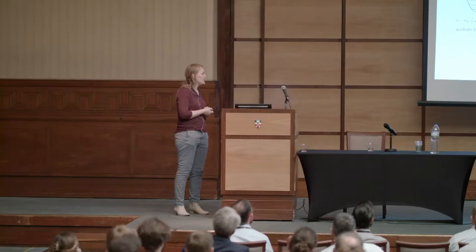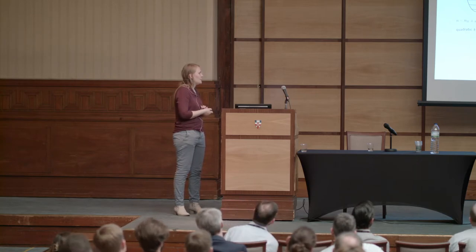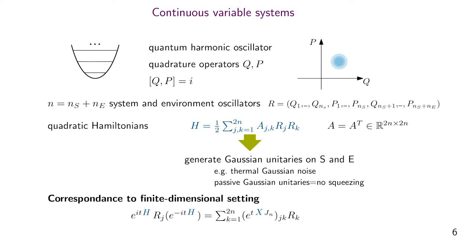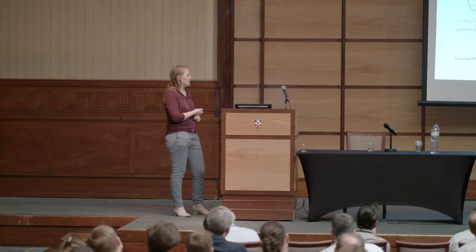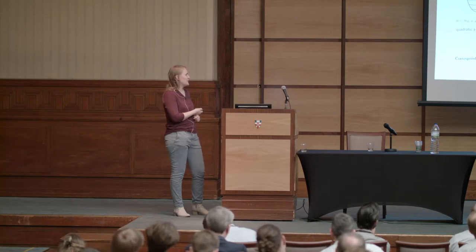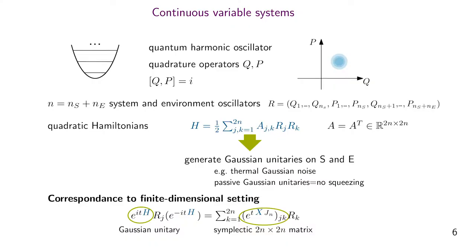There are special Gaussian unitaries — so-called passive or energy-conserving Gaussian unitaries — which have no squeezing in the phase space. The mathematically nice thing about these Gaussian unitaries for us is that we can translate everything to a finite-dimensional setting via a correspondence: conjugating a quadrature operator under a Gaussian unitary is equivalent to multiplying a vector by a 2N-by-2N matrix. Every quadratic Hamiltonian is in 1-to-1 correspondence with a 2N-by-2N matrix, and every Gaussian unitary is in 1-to-1 correspondence with a 2N-by-2N symplectic matrix.